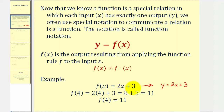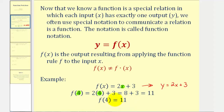To find a function value — for example, let's say f of four — we substitute four for x. So f of four is equal to two times four, instead of two times x, and then plus three. Well, two times four is eight, so this is equal to eight plus three, which is equal to 11.